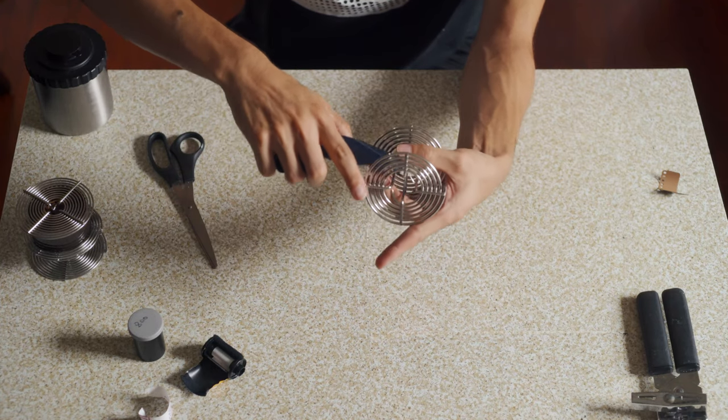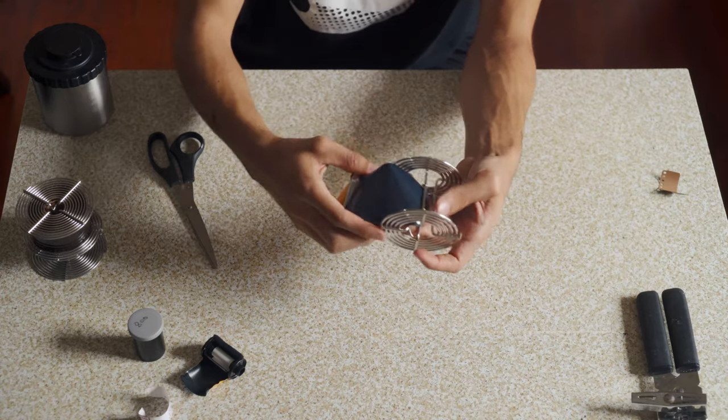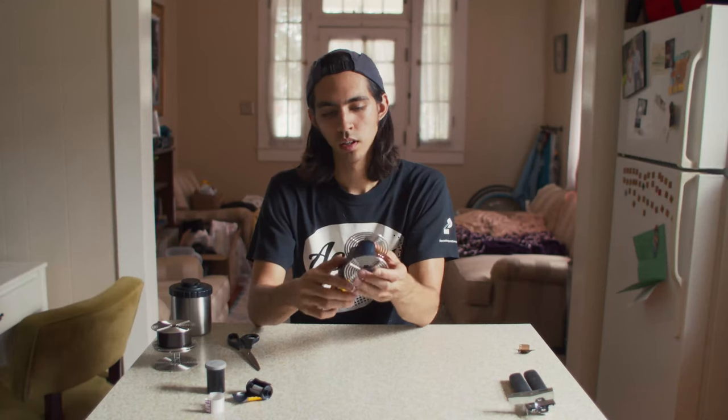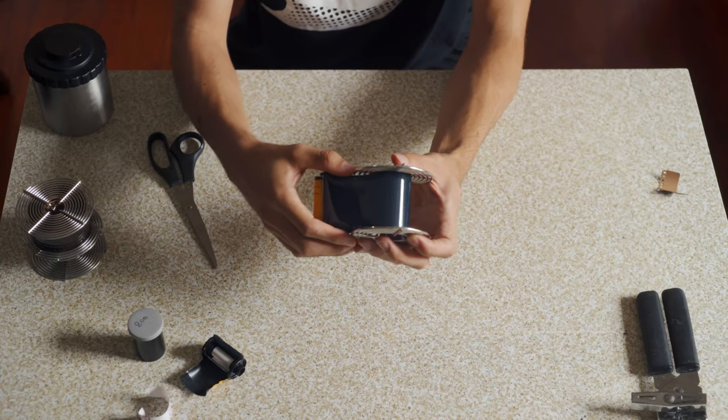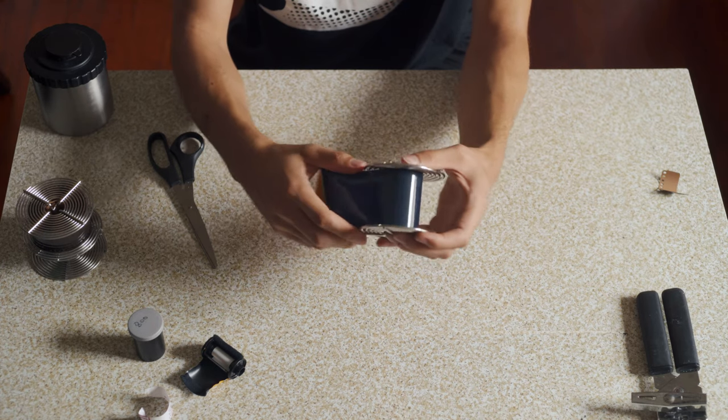I like to pinch it just like with 35mm. There you go. Find the clip. Start spiraling. You're going to want to keep your right hand a little loose so that you can allow the film to come off the spool.